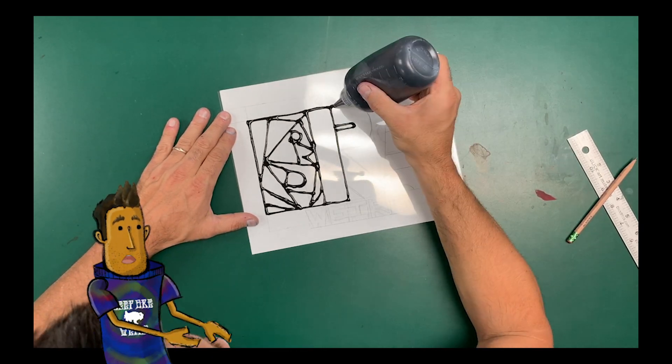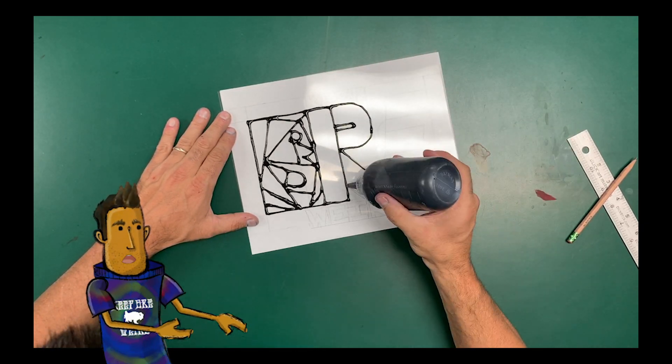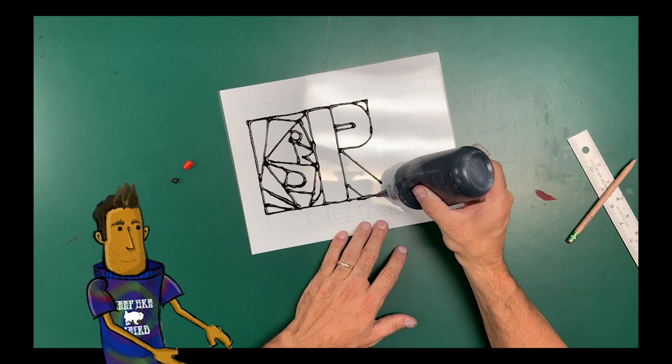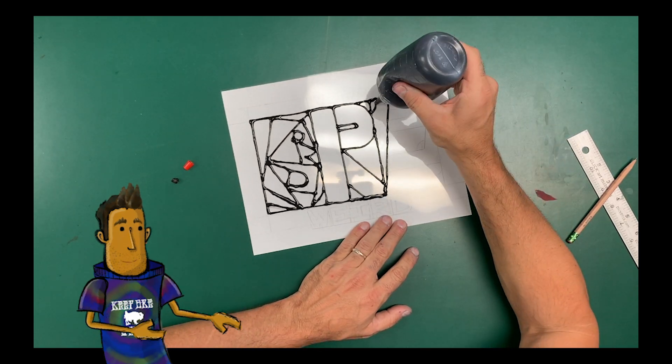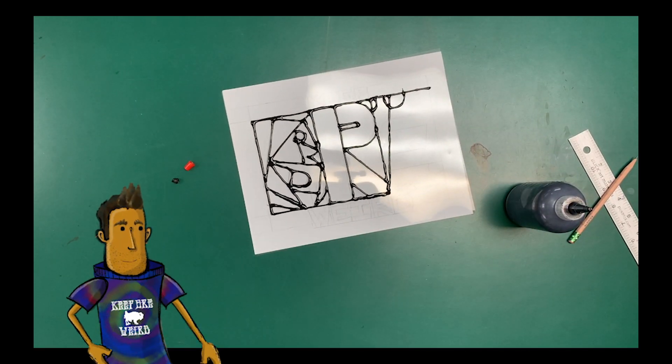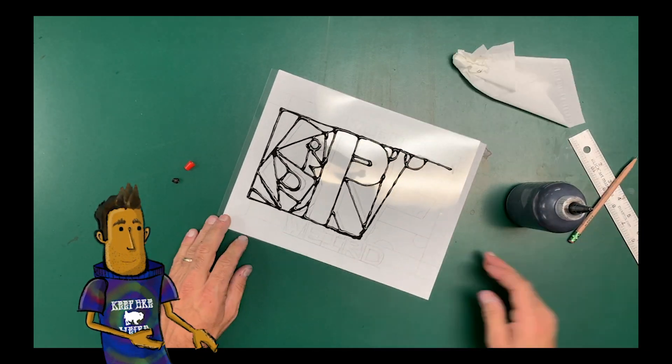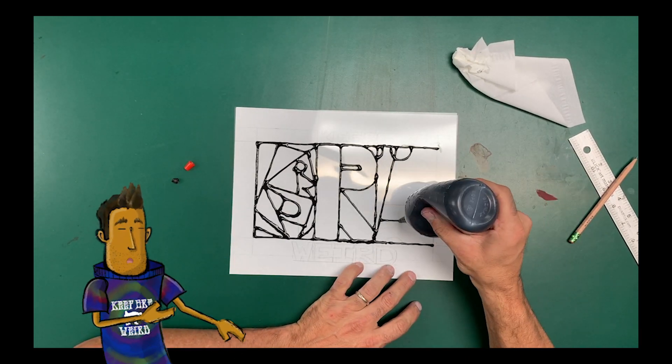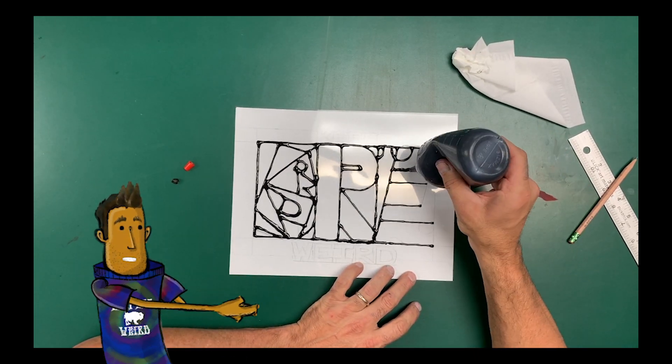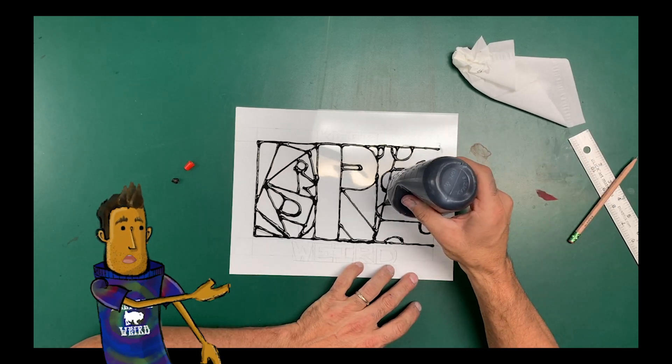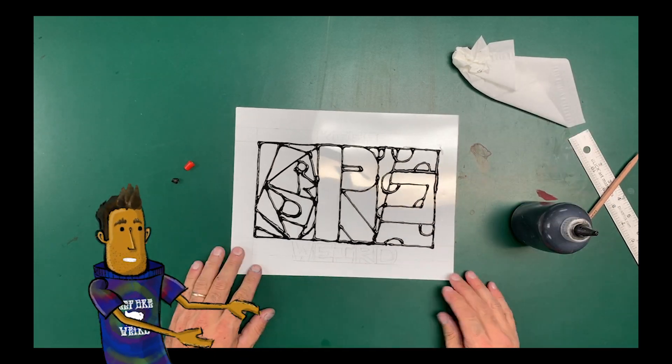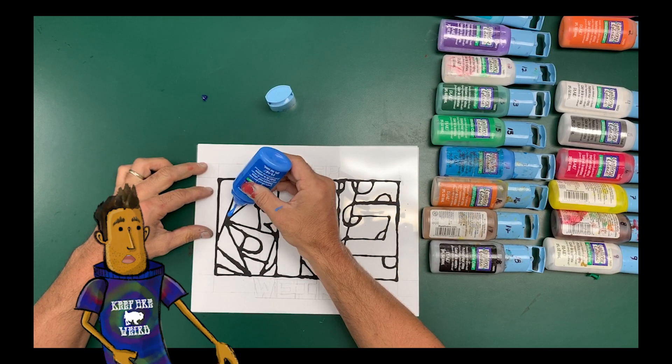Drawing with glue is kind of strange, but you just tip it over, and you kind of squeeze lightly. You don't want to squeeze too hard, because it'll leave a big, huge puddle of black glue, and you don't want to squeeze too lightly, because then it'll be too thin of a line. And all you're going to do is trace over what you drew on your white paper. So as you can see, I drew BRE, and then we're going to let it dry.